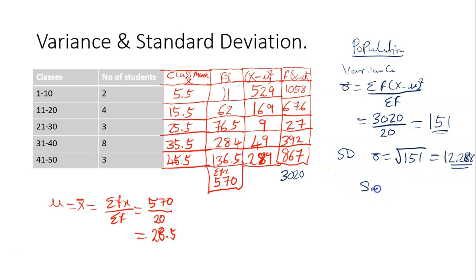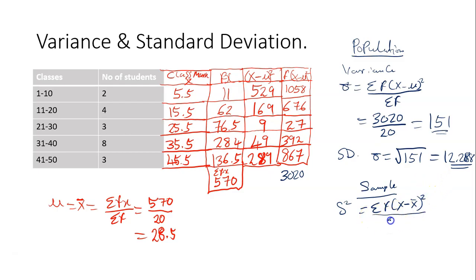Now if the question is a sample question, the sample variance is small letter s squared, which equals the sum of f times (x-bar deviation) squared divided by the sum of f minus 1. If the question was a sample question you would have written x-bar. The sum of f times deviation squared is 3020, divided by (20 minus 1), so 3020 divided by 19.